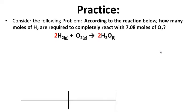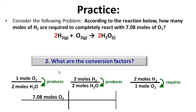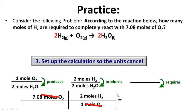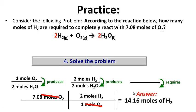Practice — according to the reaction, how many moles of H2 are required to completely react with 7.08 moles of O2? Step 1: start with what the problem gives you — 7.08 moles of O2. Step 2: the question deals with moles of H2 and moles of O2, so select the appropriate mole ratio. Set up so units cancel: 1 mole of O2 down, so moles of O2 cancel; 1 mole of O2 requires 2 moles of H2. Solving: 7.08 × 2 ÷ 1 = 14.16 moles of H2.